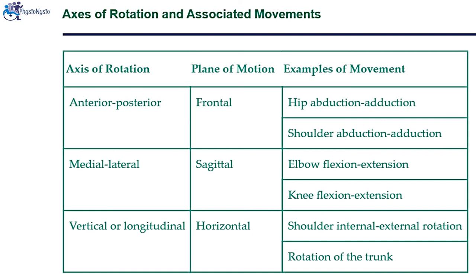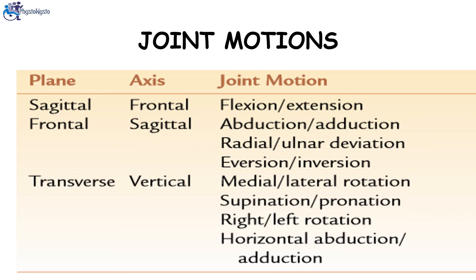In this table, you can see the axis of rotation, plane of motion, and examples of movement. In the frontal plane, the anterior-posterior axis of rotation applies, with examples including hip and shoulder abduction and adduction. The medial-lateral axis of rotation applies to the sagittal plane, with examples of elbow and knee extension and flexion. The vertical or longitudinal axis of rotation lies in the horizontal plane, with examples including shoulder internal and external rotation and rotation of the trunk. I hope that now you have a clear concept of axes and planes and understand which movement is occurring in which plane.